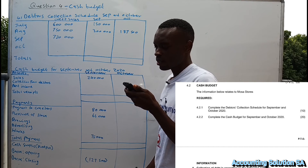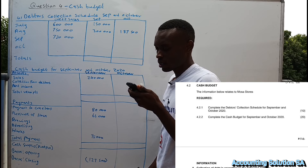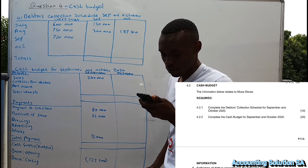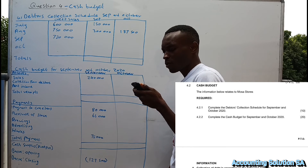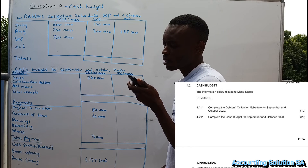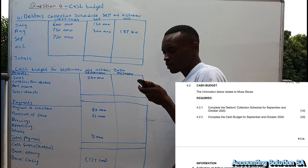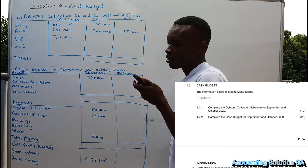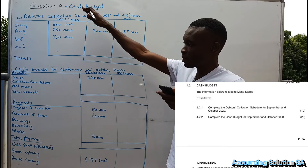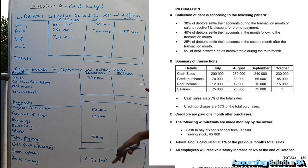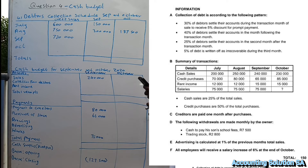Okay, so question one: they said complete the data collection schedule for September and October — 10 marks. 4.2.2: complete a cash budget for September and October — 20 marks. Some of the information, as you can see, we are already given.